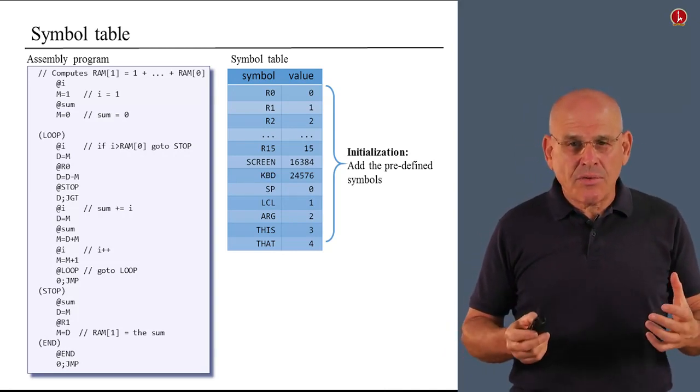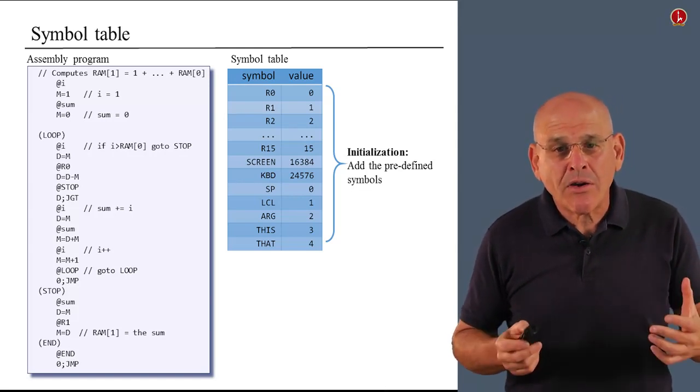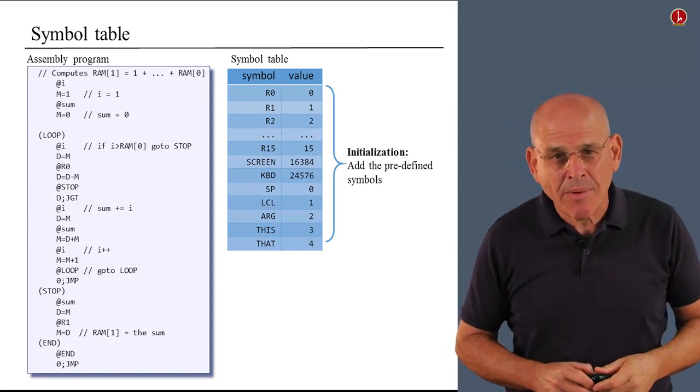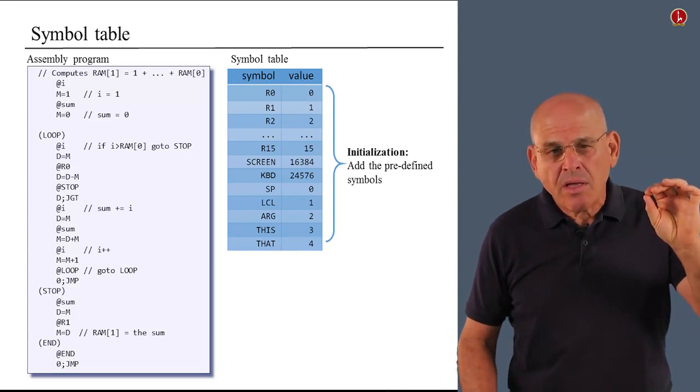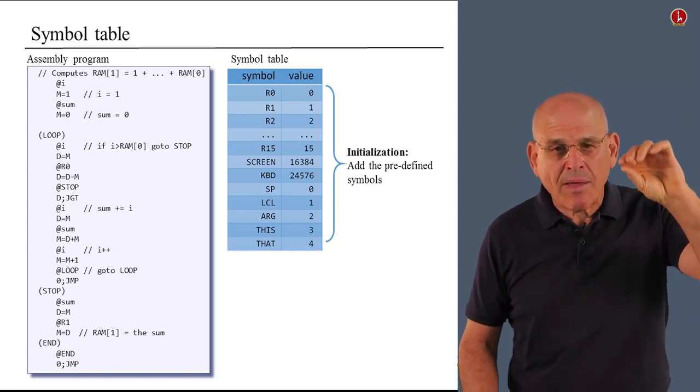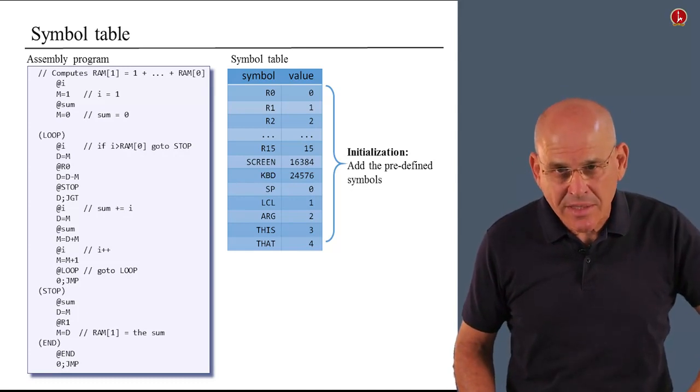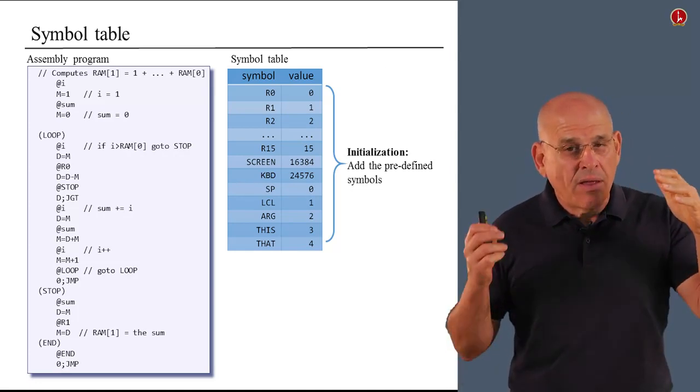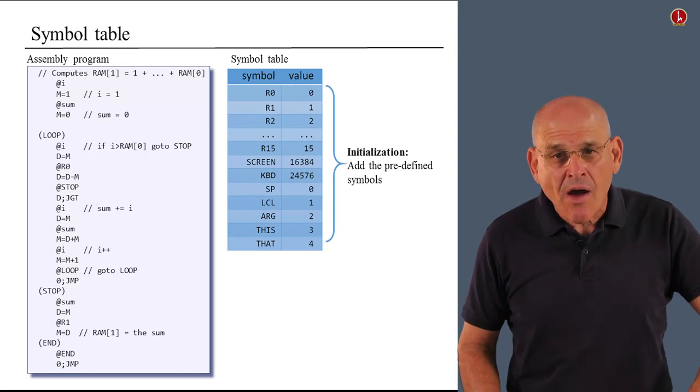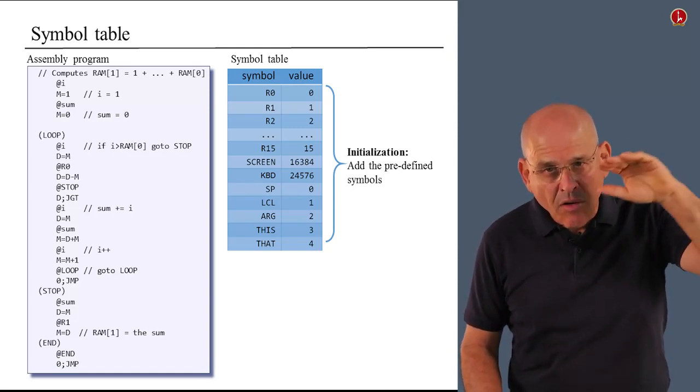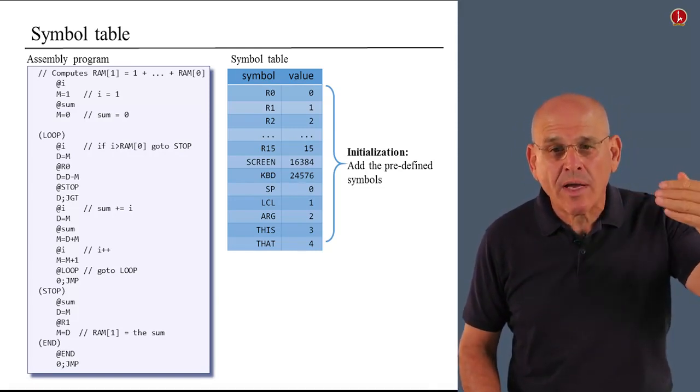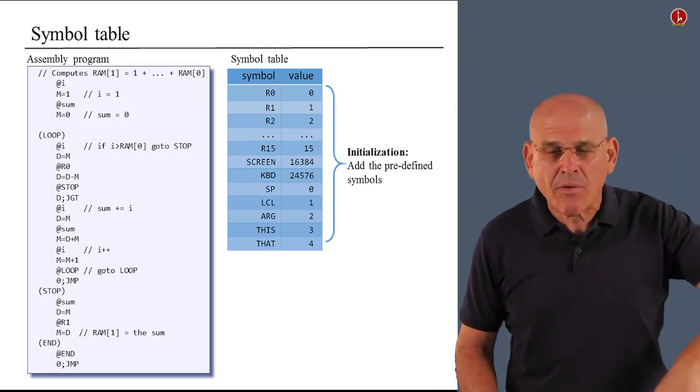Now what do you do next? The next thing that you do is you march through the entire text file that constitutes your source assembly program. And the only thing that you do is you look for label declarations. You look for lines of code that begins with left parentheses. Once you have such line of code, you know that if the code was well written, if it contains no error, it must be the beginning of a label declaration. Now, as you do this, you also keep track of how many lines you read so far. And as I explained previously, you count only real instructions, skipping label declarations and white space.